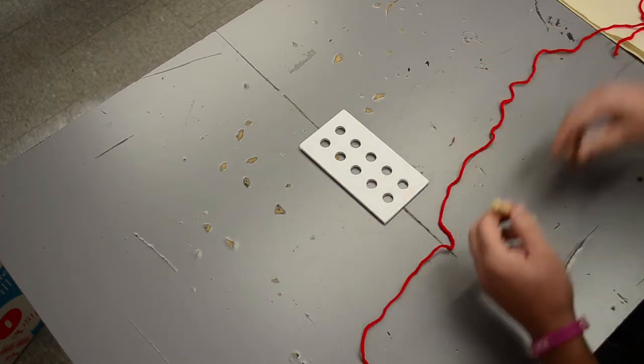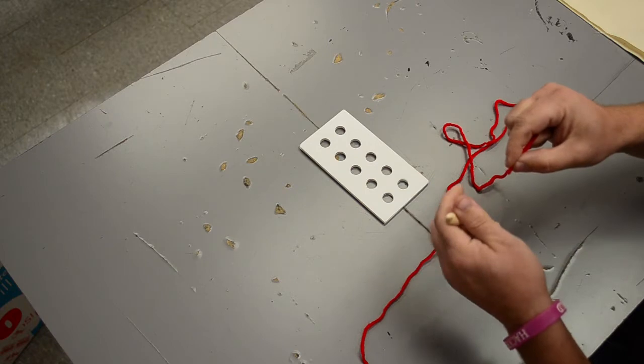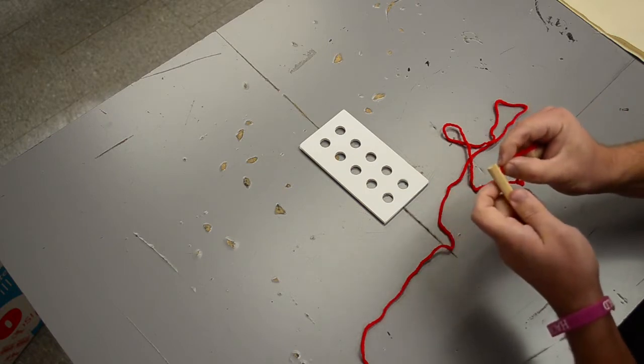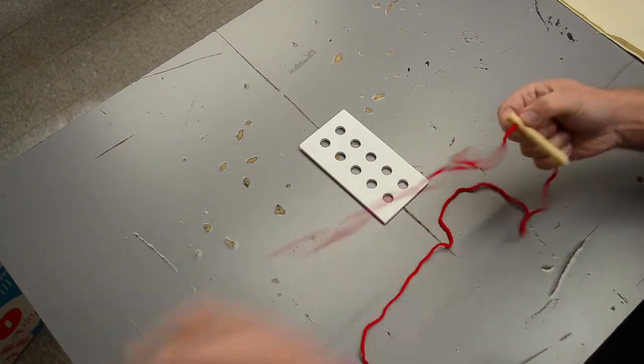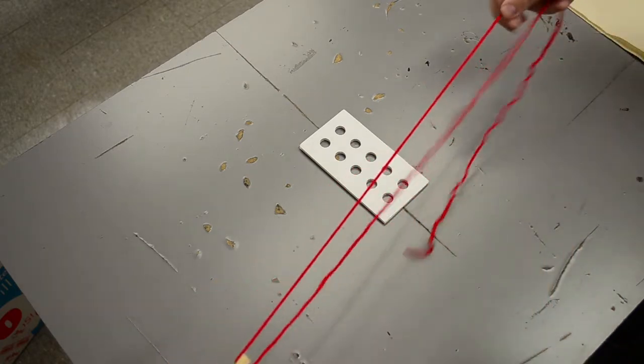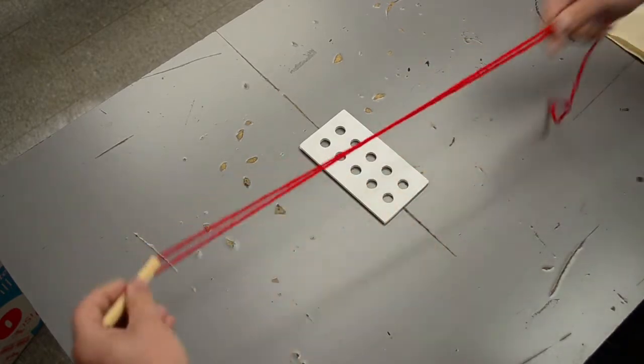We're going to start off with our practice needle and this is going to represent our thread. The first thing that we want to do is thread our needle, so we can push the yarn through and pull it out along the other side, and we want to match the far ends up.